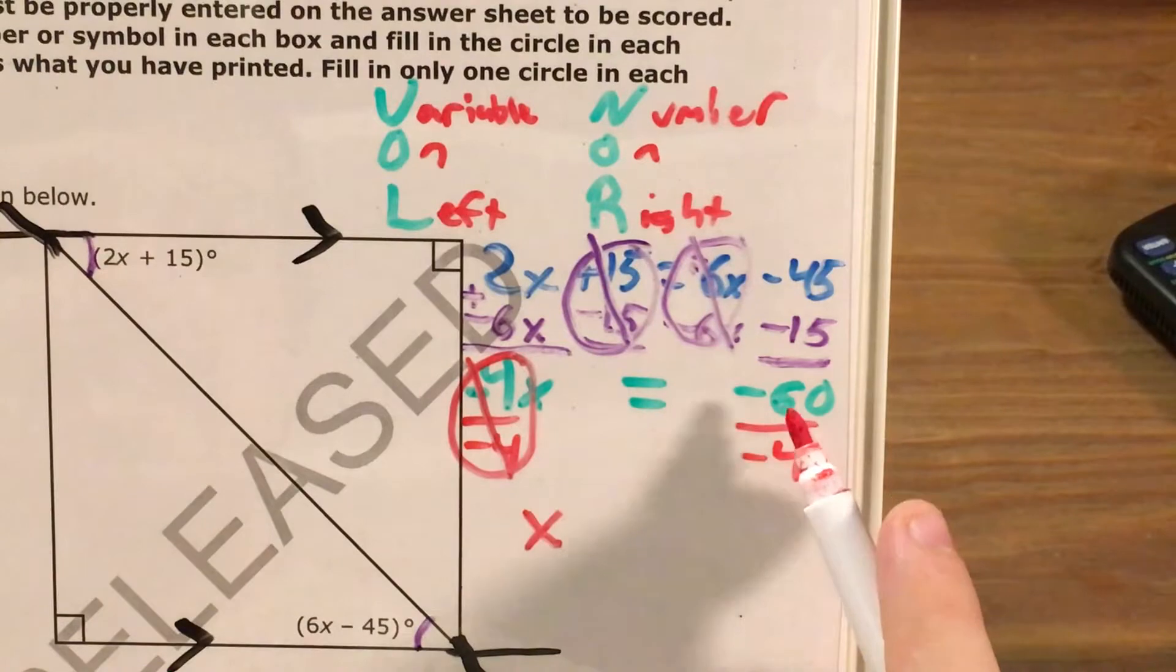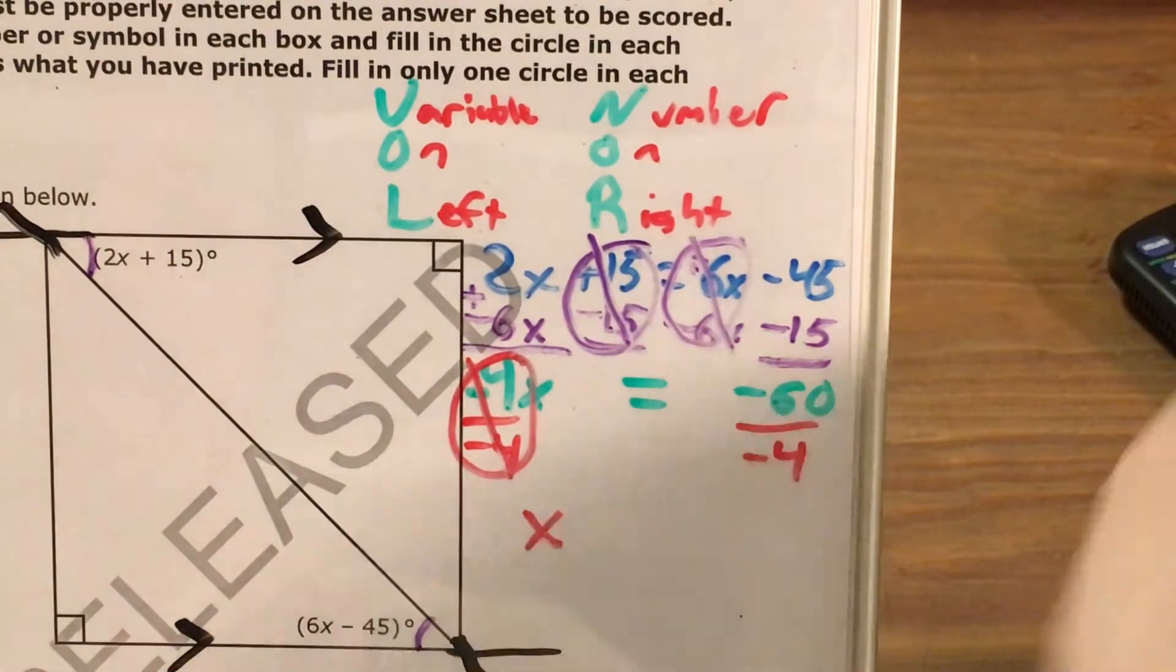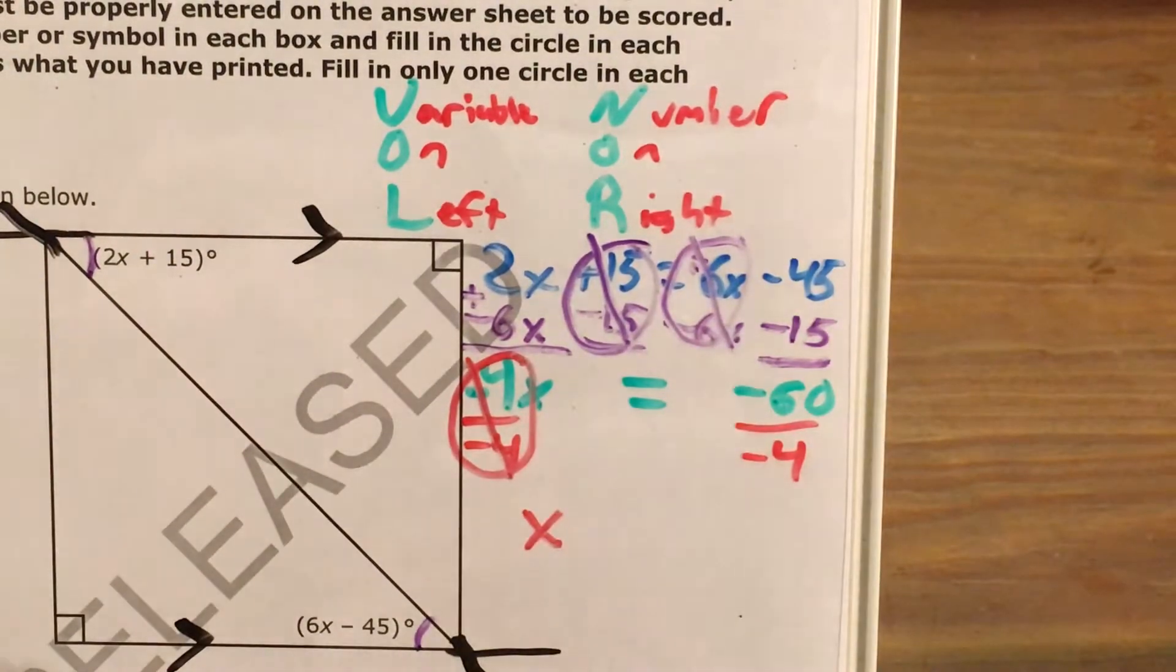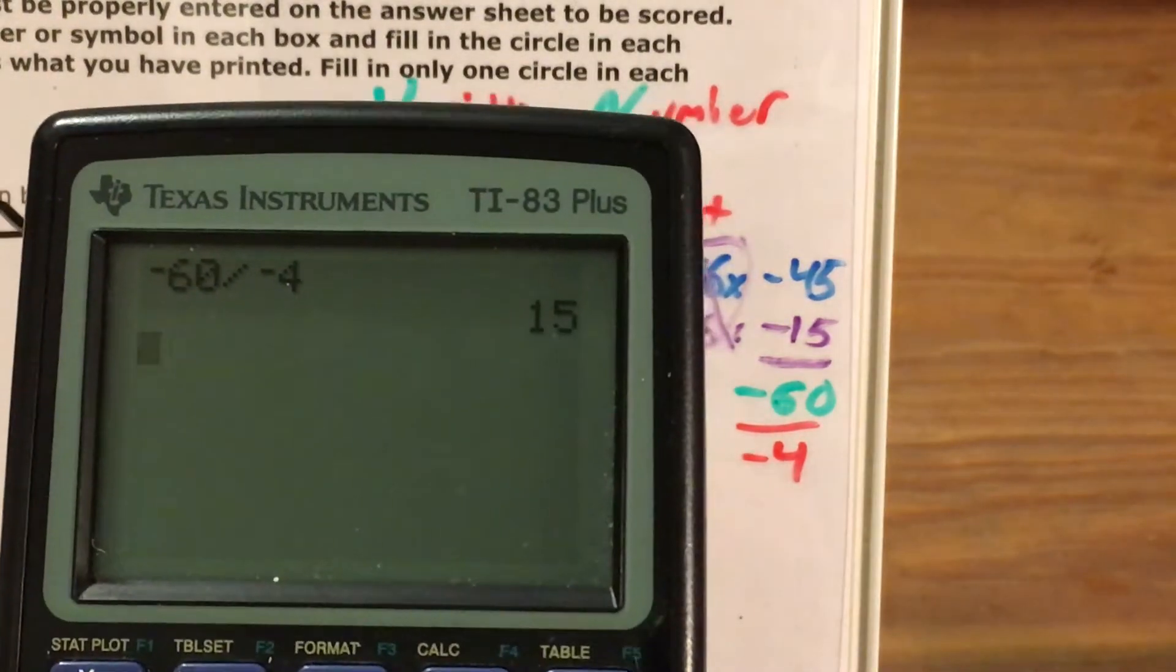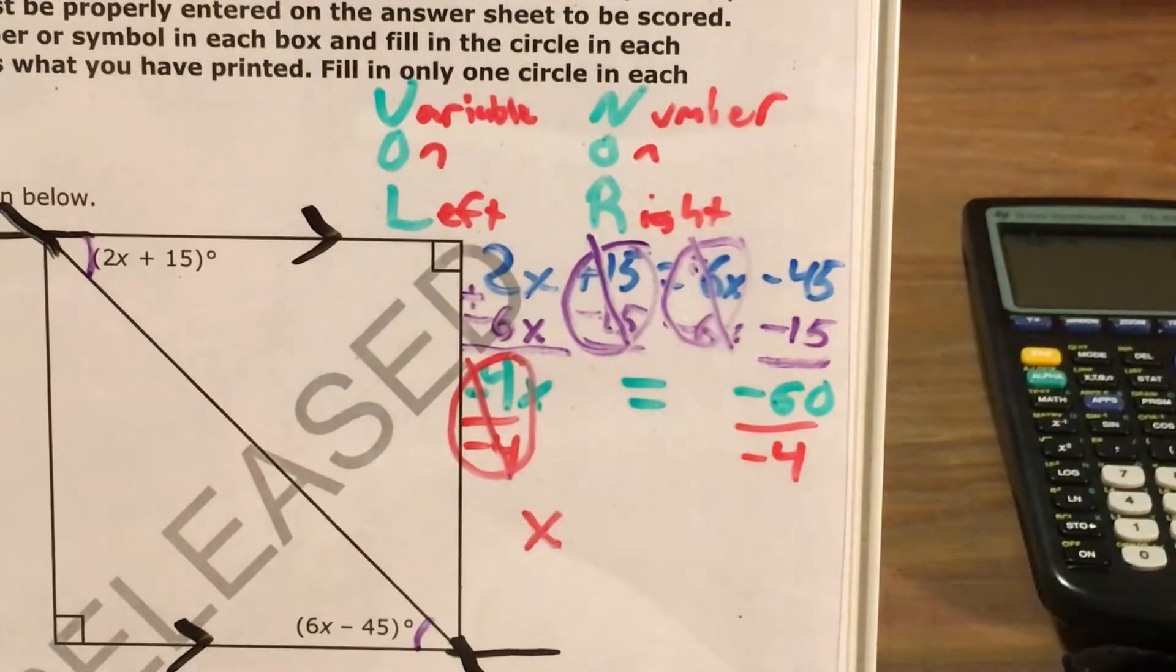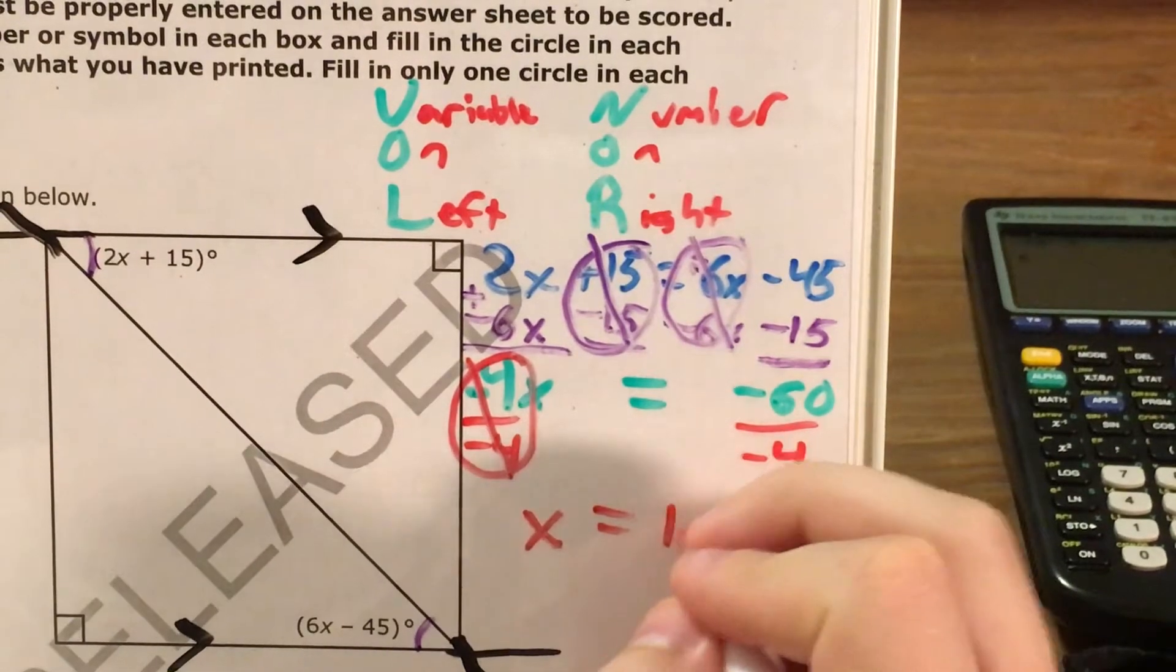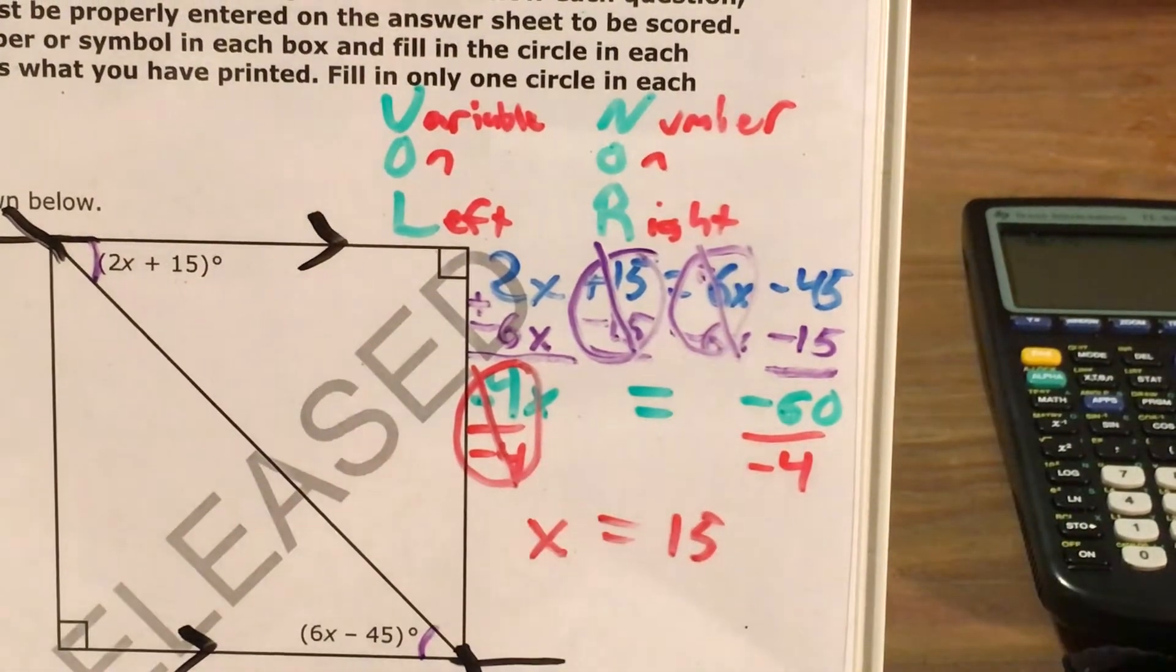And now negative 60 divided by negative 4. Negative 60 divided by negative 4. This gets me positive 15. So after all that, I get an answer of positive 15 for my variable.